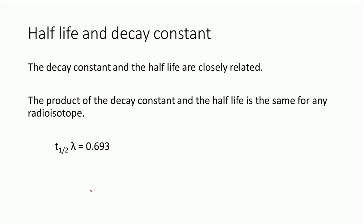Let's try and link the half-life into the decay constant, because there's a very close relationship between the two. For any radioisotope, they're going to have different decay constants because the probability that any nucleus within that sample will decay per second is different for different radioactive nuclei. The half-life is also different for each type. But when you multiply the half-life by the decay constant, you always get the same value: 0.693, or in other words, the natural log of two.